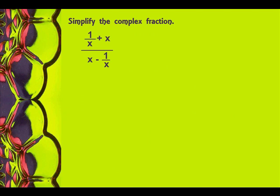Let's simplify the complex fraction. What I do is look in the numerator and say, what would my common denominator be? Well, that would be x. Now when I look in the denominator, I once again say, what would my common denominator be? And that would be x. So that tells me I'm going to multiply by x over x.